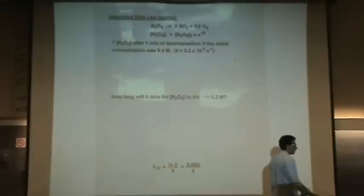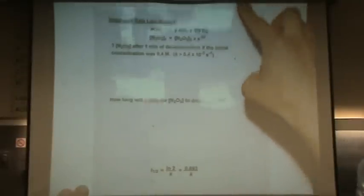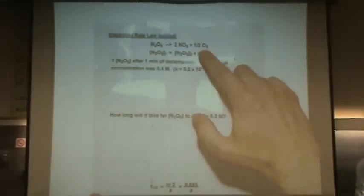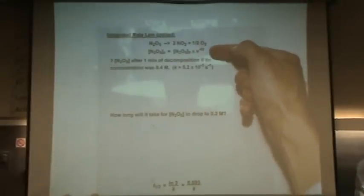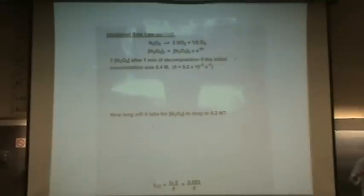Okay, so we have a reaction. Dinitrogen pentoxide goes to two nitrogen dioxides and half oxygen. We even give you the integrated rate law. That would not happen on the exam, but here we go. Well, we'll give it to you on the back, but we won't plug in the concentrations for you.